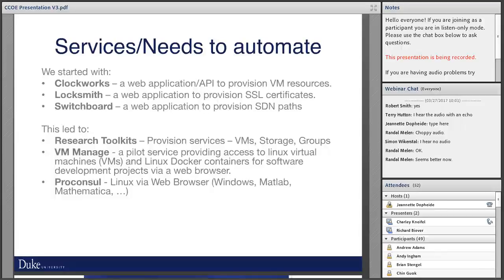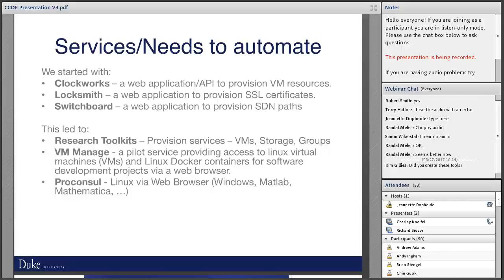Another app is Locksmith, which provisions SSL certificates, allowing researchers, faculty, and IT professionals to get their own SSL cert through Komodo and manage expirations and renewals. Then there's Switchboard, our web app to provision SDN paths or more directly the endpoints allowed to communicate. Think of it as Researcher X owning Machine X and Machine Y and wanting a fast path between them - or setting up a fast path to some centrally managed service.